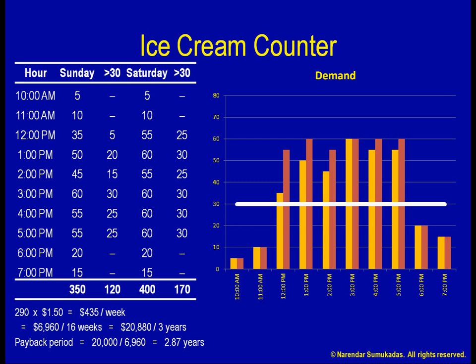Wait a minute. Am I still missing something here? Am I not making the same mistake that I made earlier? Suppose a customer shows up at 11 a.m. on Sunday and asks for an ice cream. I am busy at that time, but I say, 'No problem, sir or ma'am. I have planned my capacity on an hourly basis, so there is enough capacity for you sometime during this hour. As a matter of fact, I can serve you your ice cream at 11:42 a.m. Please come back at that time.' Can I really serve the 11 a.m. customer's demand at 11:42 a.m.? Clearly, just like it doesn't make sense to match demand and capacity on a weekly or daily basis, it doesn't make sense to match them on an hourly basis either.